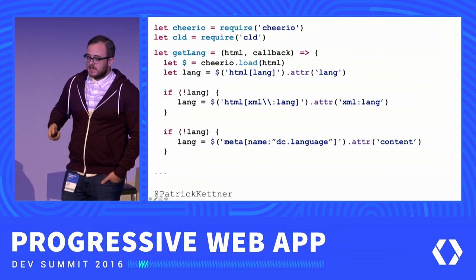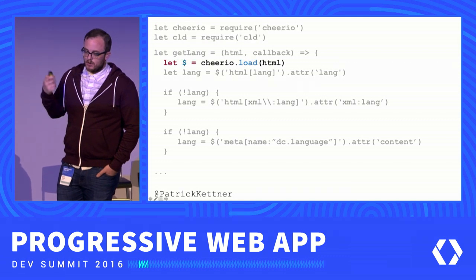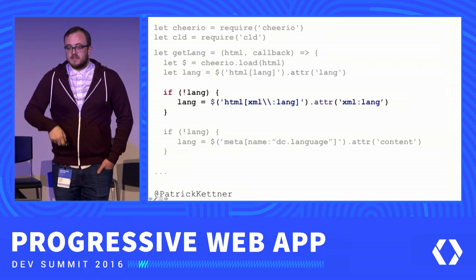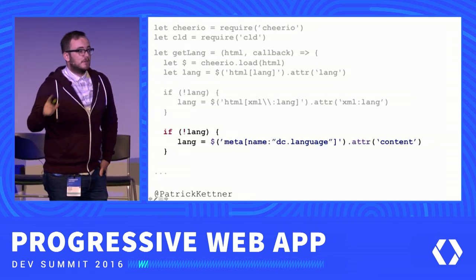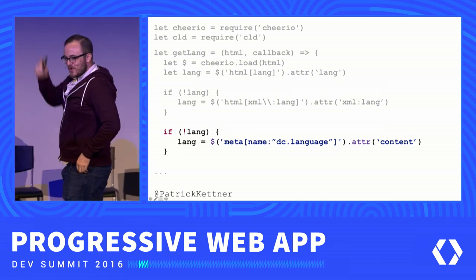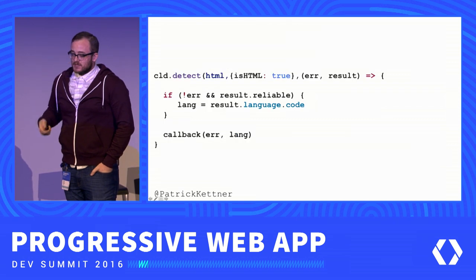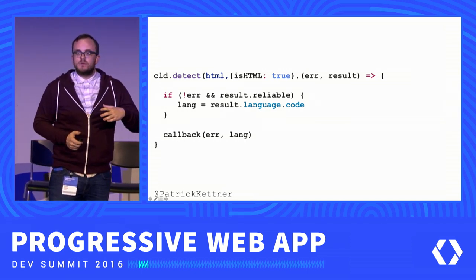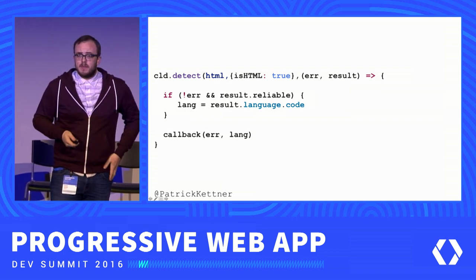An example of what Manifestation does: for language detection, it loads the page in Cheerio — a server-side jQuery — and checks for the lang attribute on the HTML. If that doesn't exist, it checks the XML language attribute. If that doesn't exist, it checks the Dublin Core language attribute. If none of those exist, which is unfortunately common, we fall back to Google's Compact Language Detection — loading the entire text of the page through the tool that powers Google Translate's language detection. It detects around 160 languages and is pretty reliable.